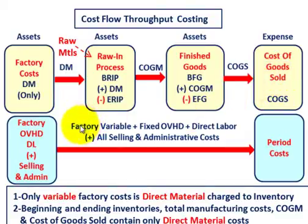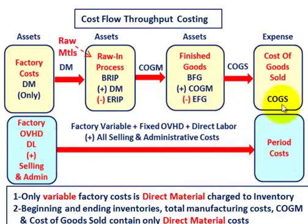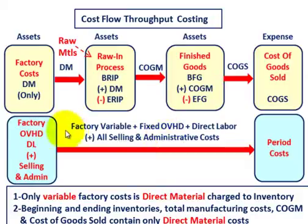Factory overhead — both variable and fixed — plus direct labor, plus any selling and administrative expenses are all expensed as period costs. They would not be included in cost of goods sold; they're expensed separately for the period. That covers factory variable and fixed overhead, direct labor, and all selling and administrative costs.